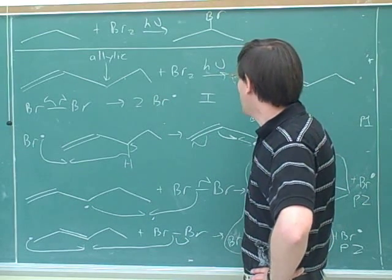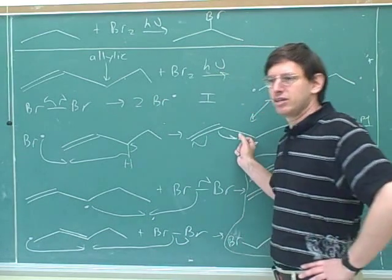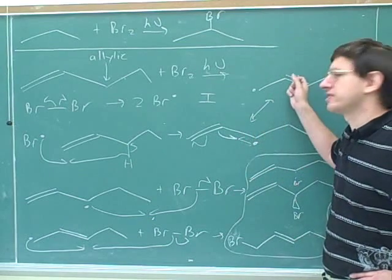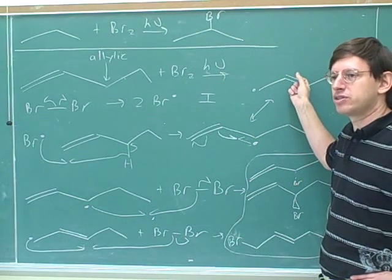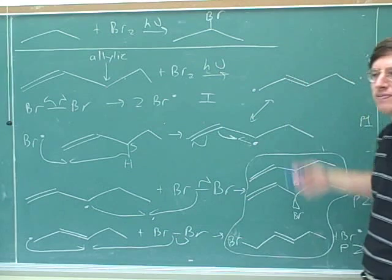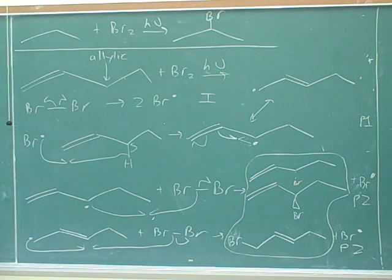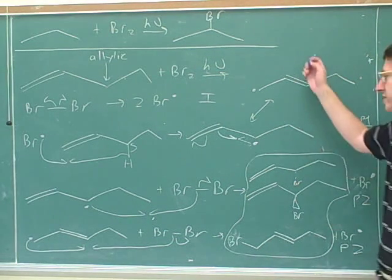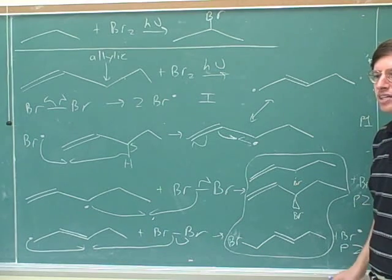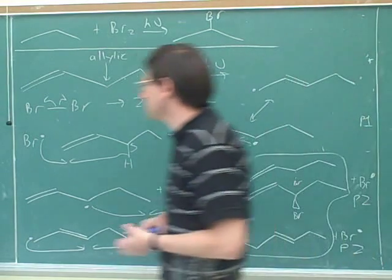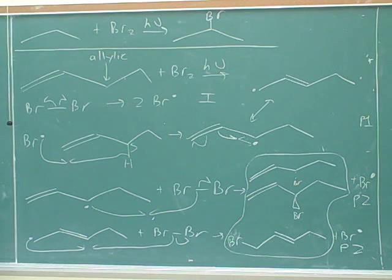But what you should do is draw the radical intermediate and all of its resonance structures because that's what tells you where the halogen can attach. If you draw the radical intermediate and all of its resonance structures, that will tell you all the different places that the halogen can attach. Now, this is what is called radical allylic halogenation.